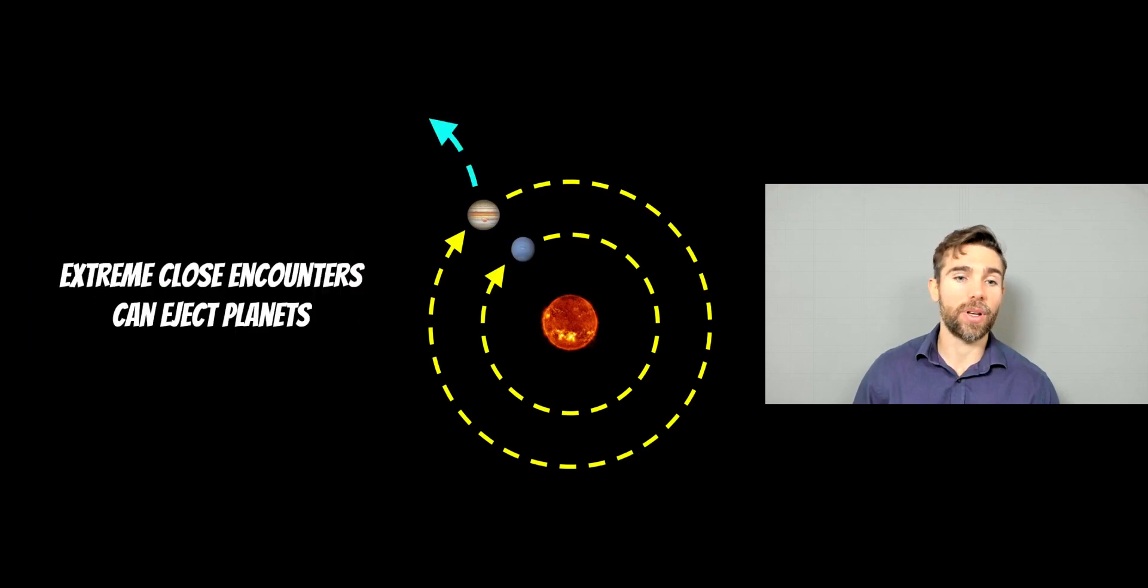So in extreme close encounters between planets, you can completely eject one from the system. And this occurs if your stars are very close. So if a star pass very, very close to the sun, then it's going to alter the planet's orbits. But most likely, they're quite a long way off. So they pass at a reasonably large distance. So there's no catastrophic interaction between the sun or the solar system and an outside star.